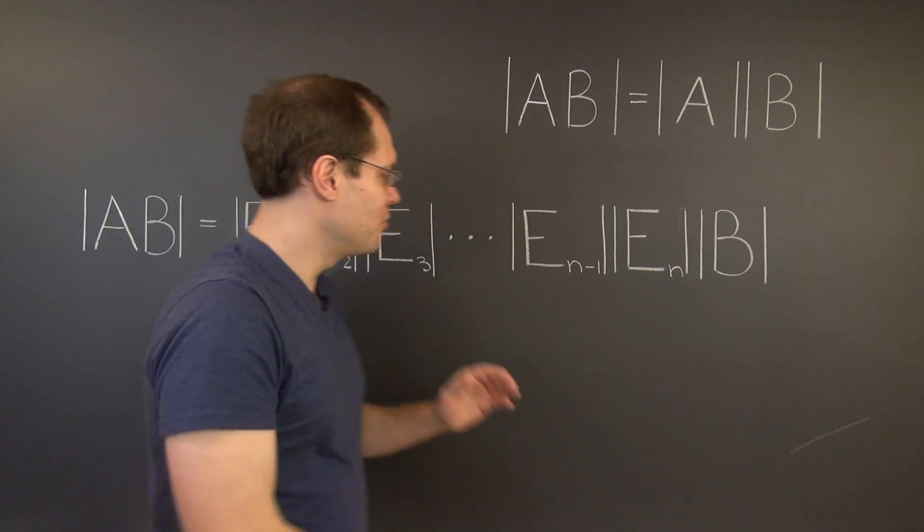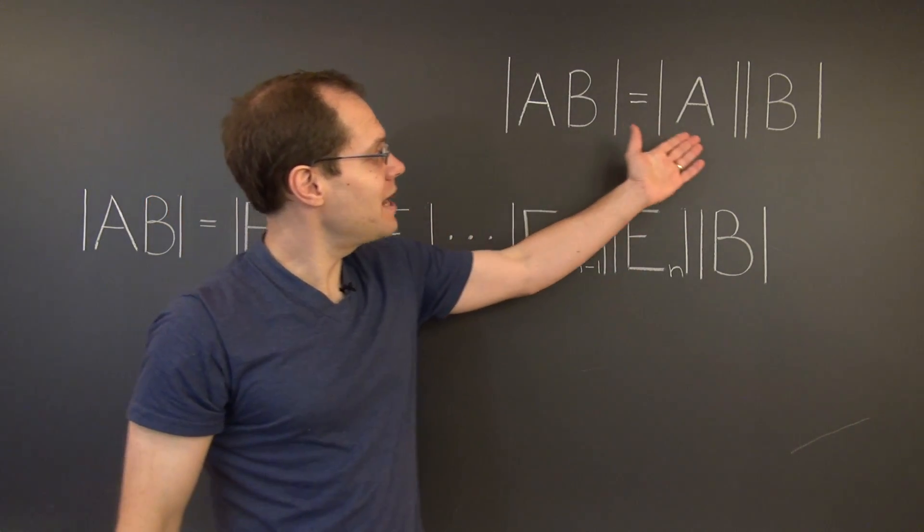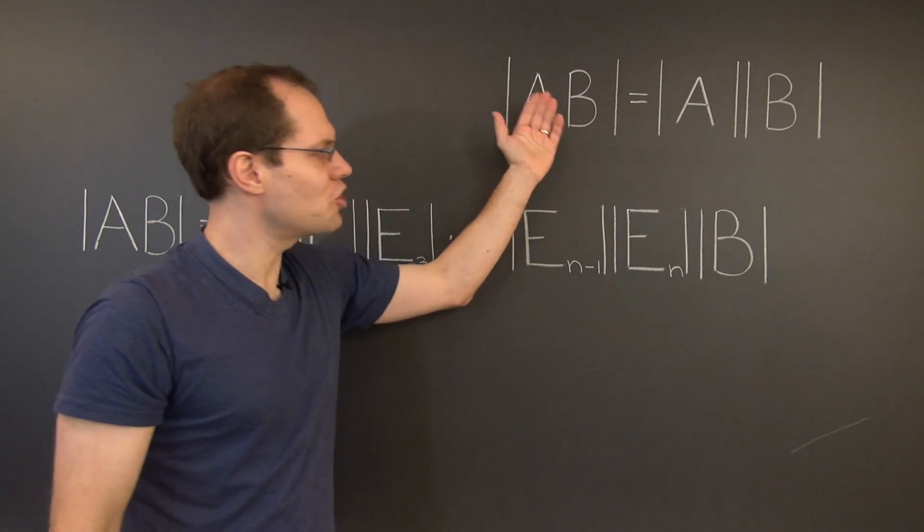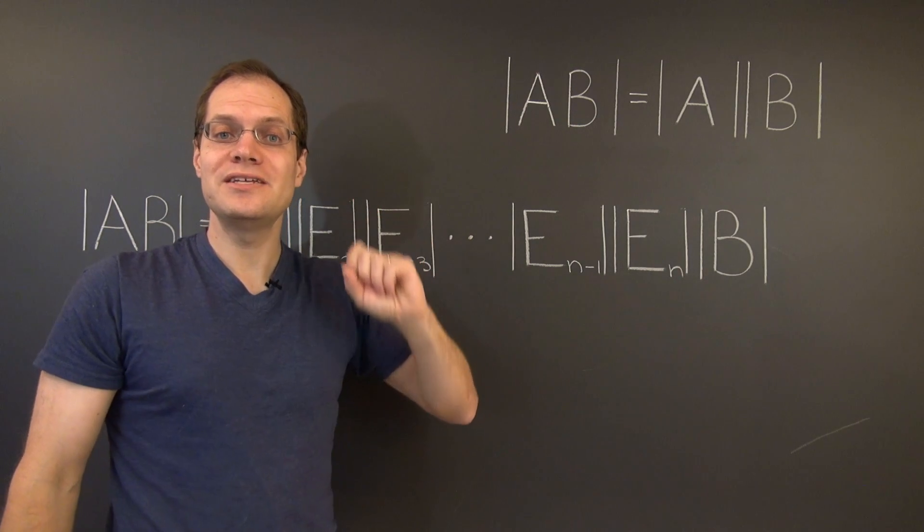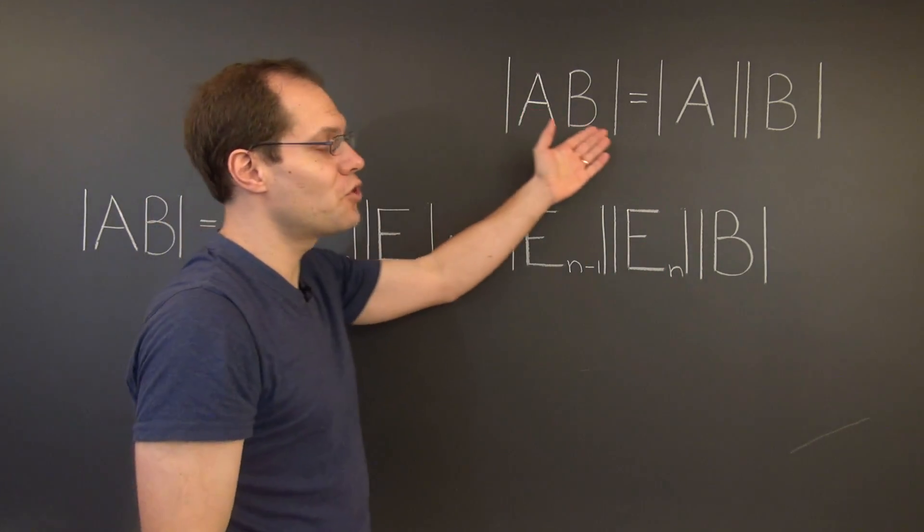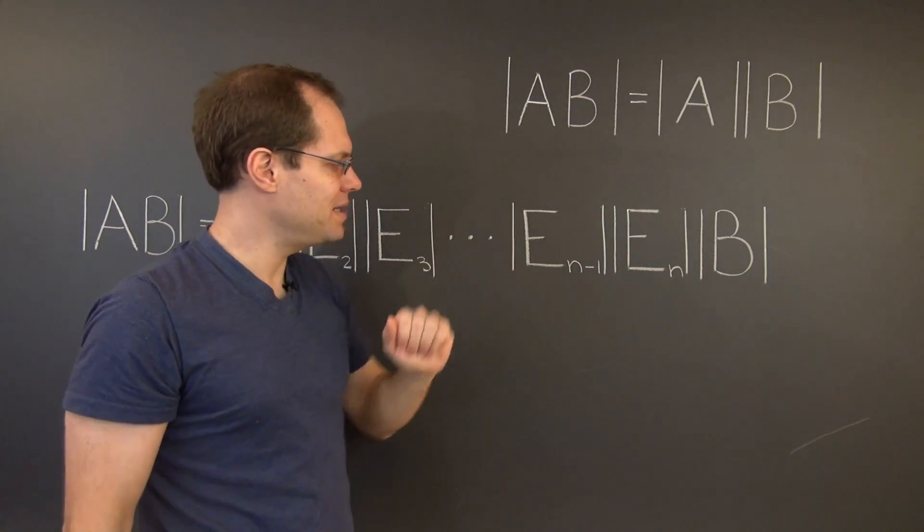And now we can combine all of the elementary matrices together, by applying this formula in reverse, by going from the product of determinants to the determinant of the product. But we need to be careful, we need to go from right to left, because this formula has only been established for elementary A's, not B's.